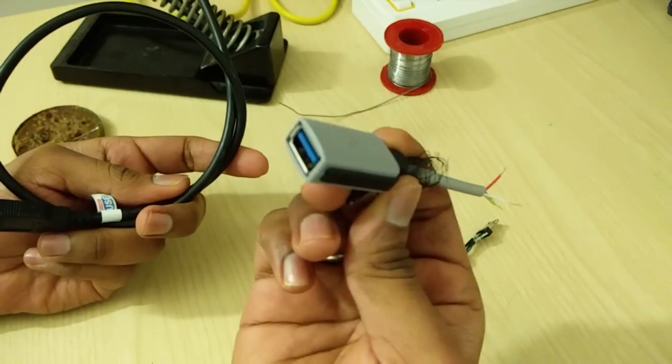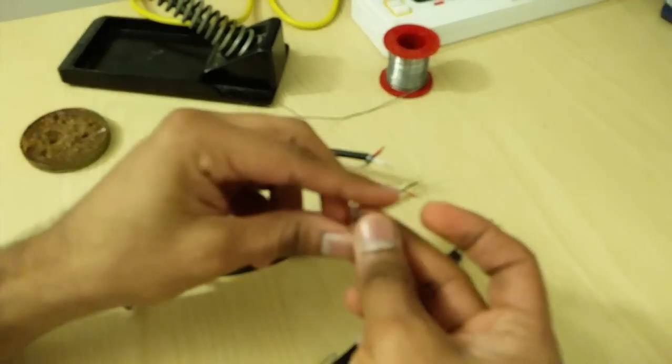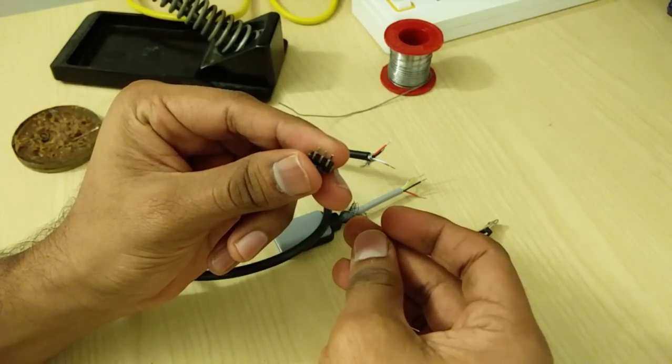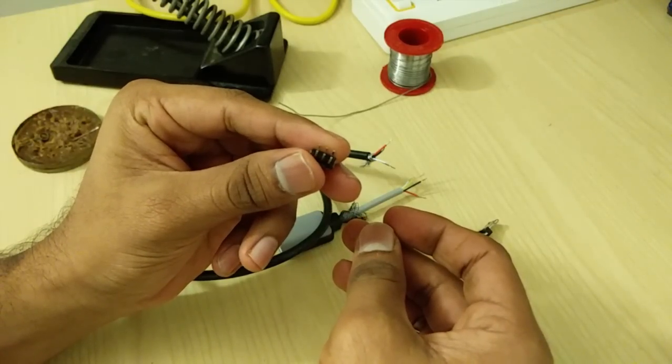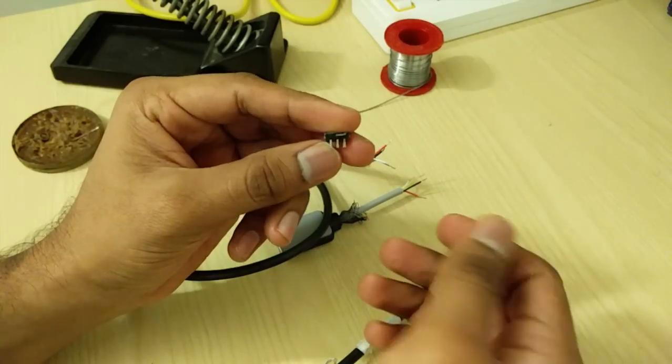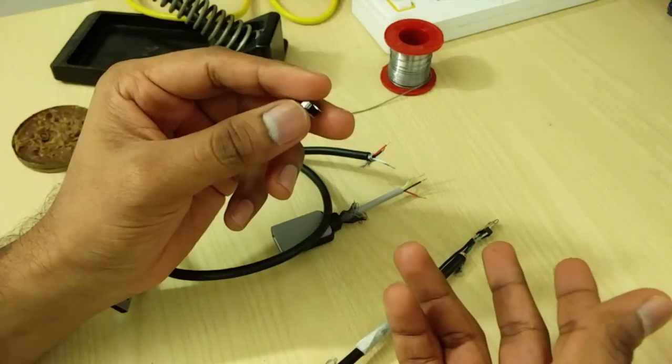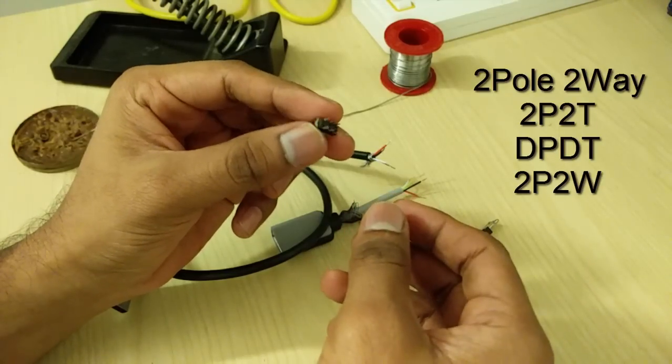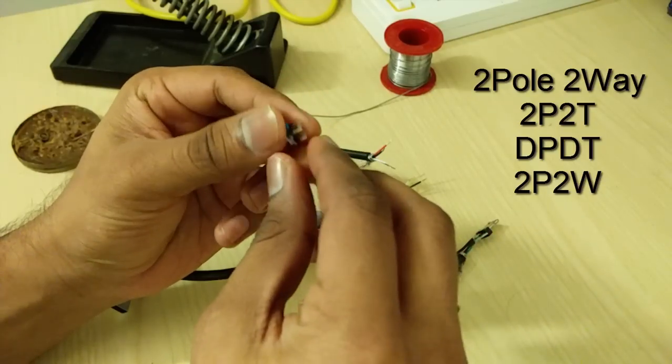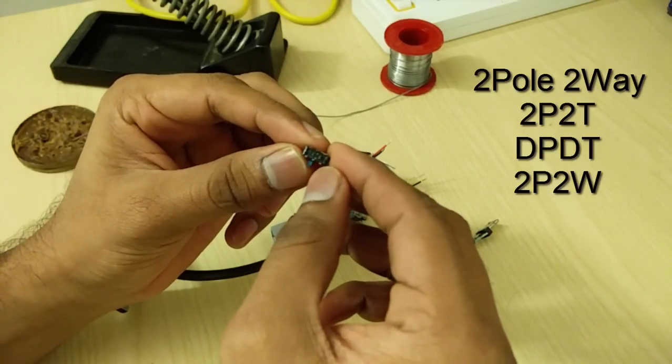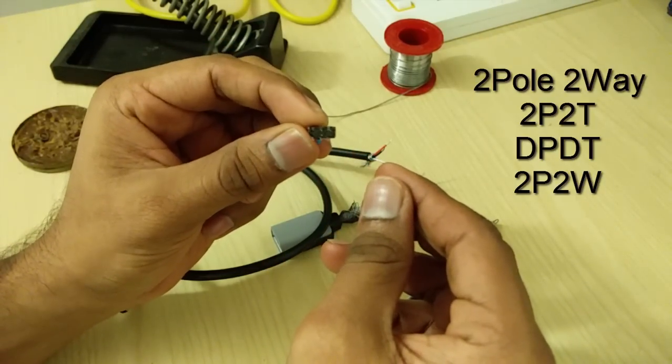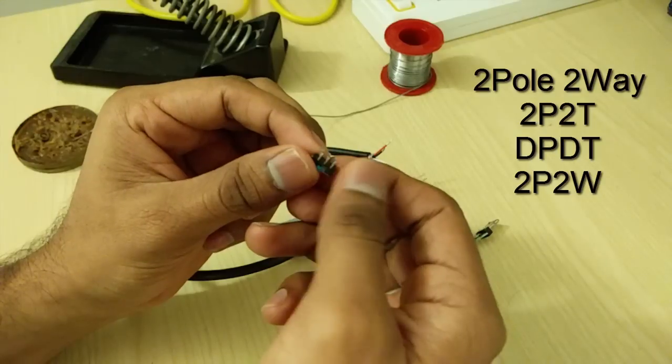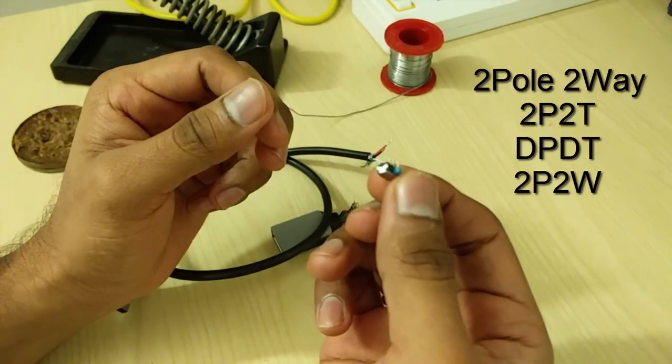And most importantly, a DPDT switch double pole double throw, also called as two pole two way switch or 2P2T switch. In the screen I have listed all the possible names of the switch. It has two poles which means two center pins and four other pins. In all, this switch is expected to have six pins. The center pin is common to both the corner pins. So you need this two pole two way or DPDT switch.